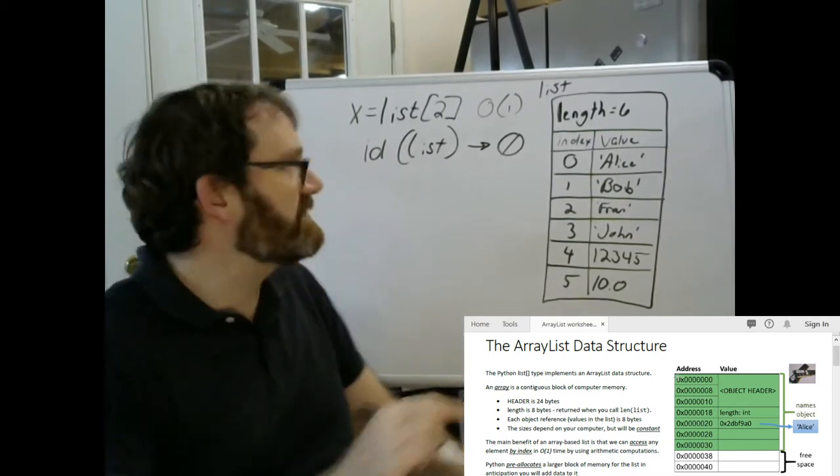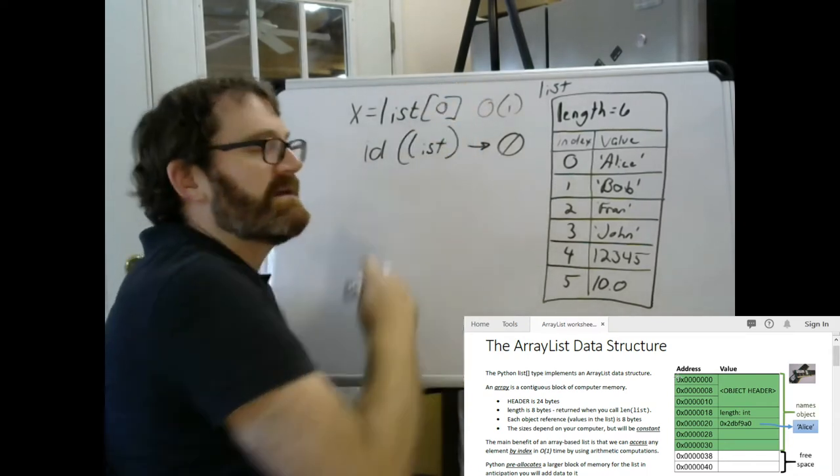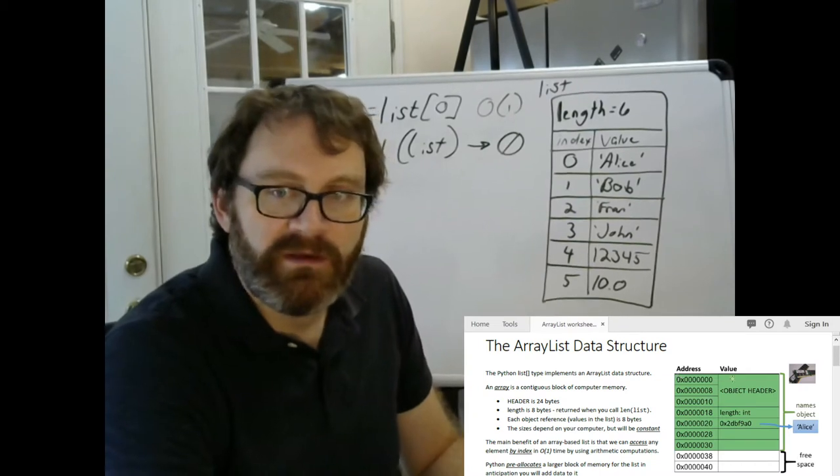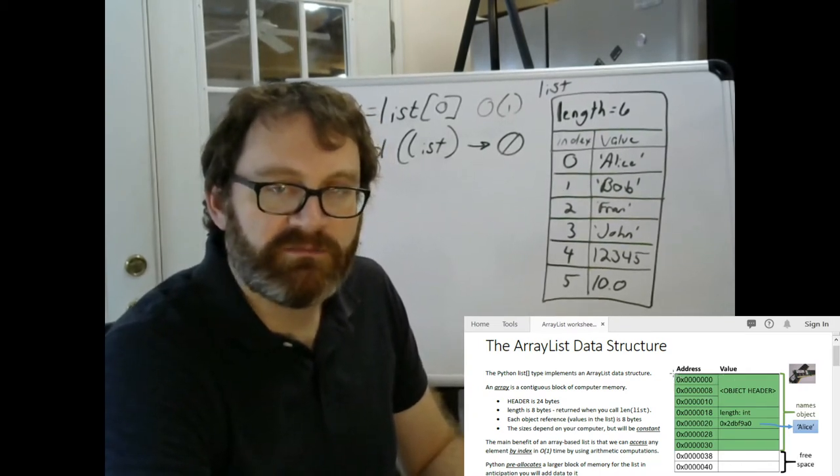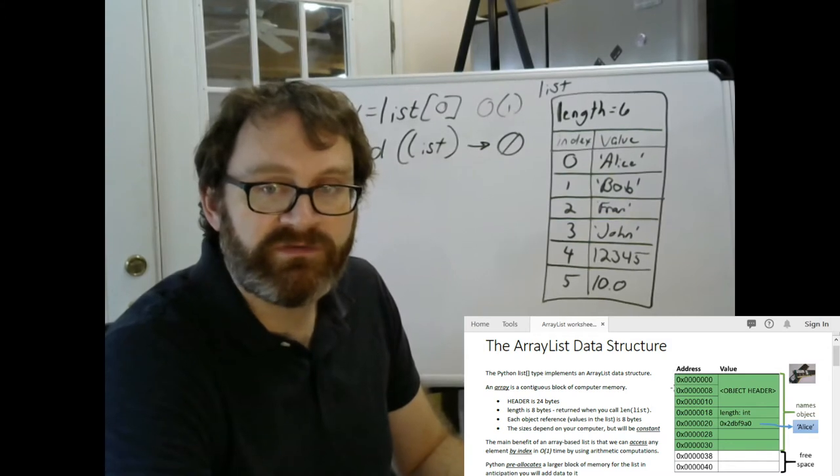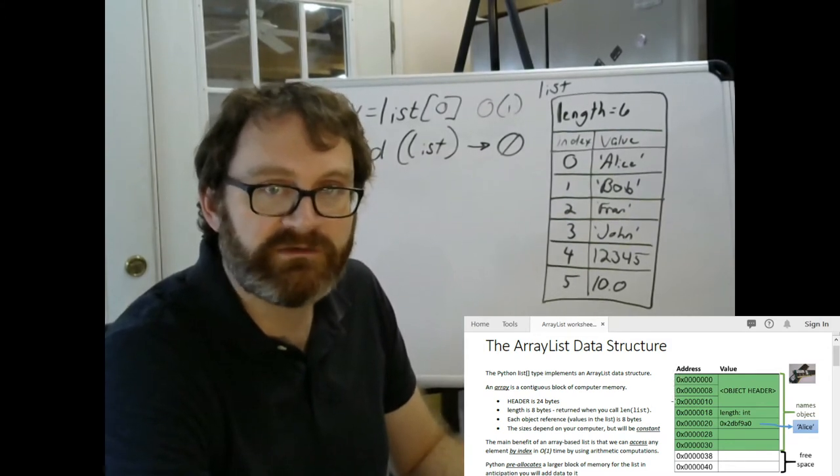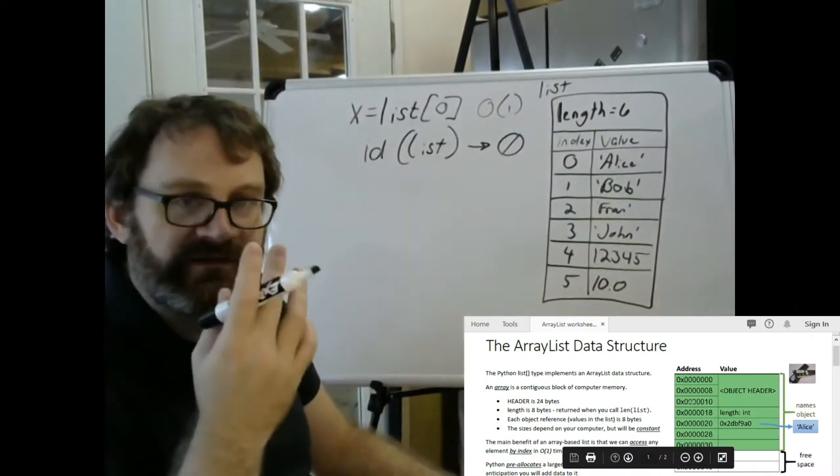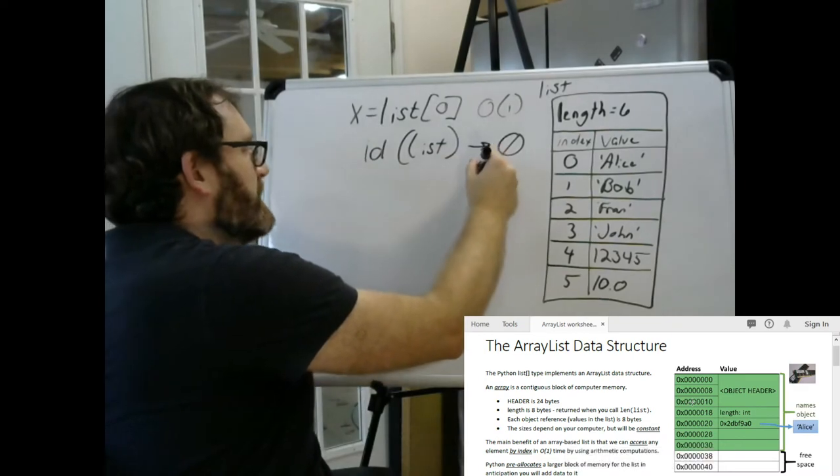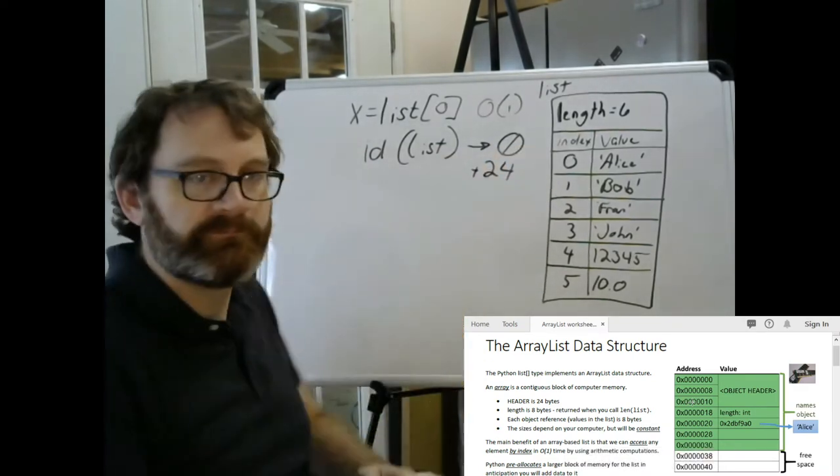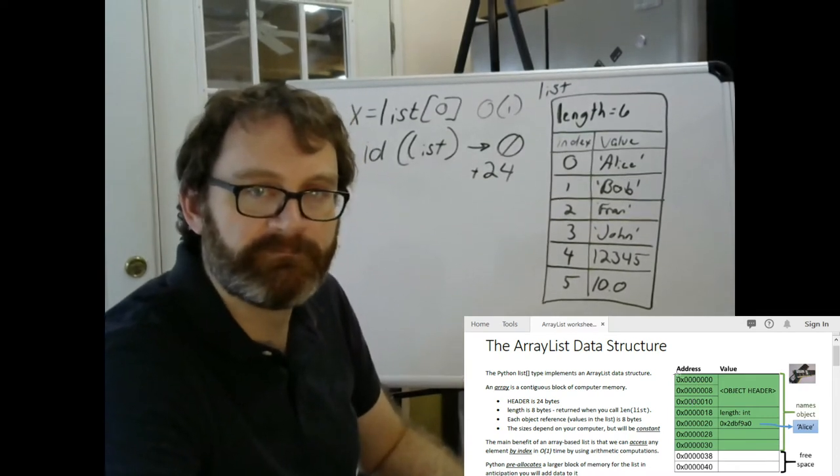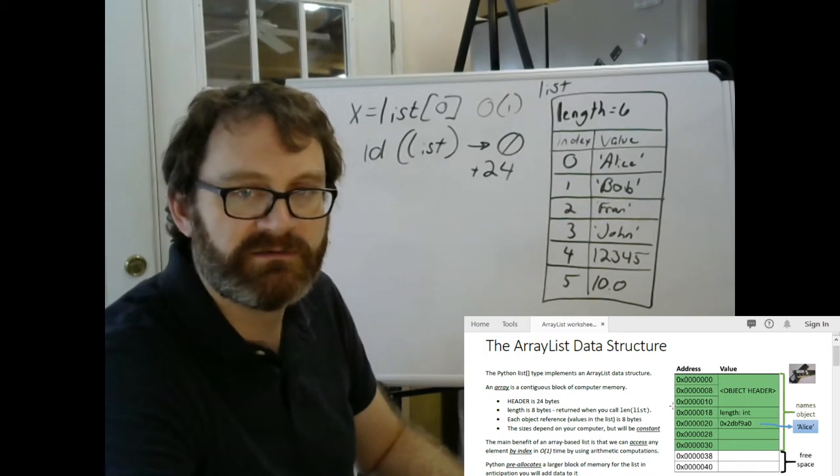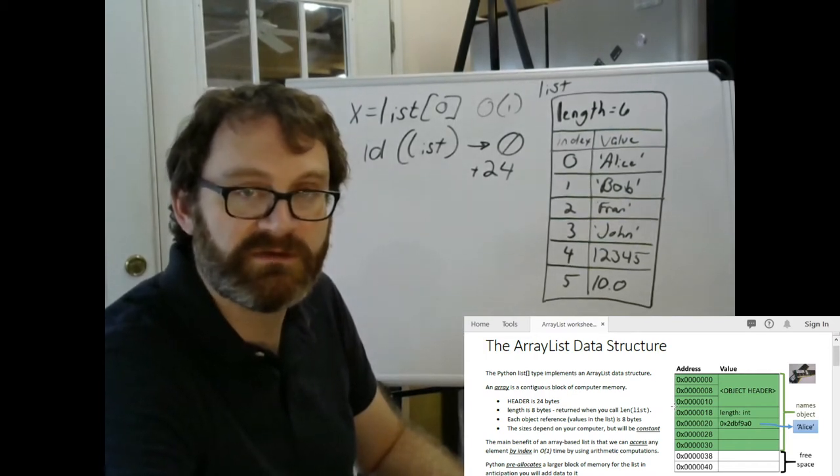Well, I want to focus on the item at index zero. How can I get there? Recall that I know the starting point in memory, and then I also know that this object header has a fixed size, always, 24 bytes. It may be a little different on your computer, but it's going to be the same. So if I start at zero, and then I add 24 to it, where would that take me in memory? Well, it would take me past the object header, down here, to where the length is kept.